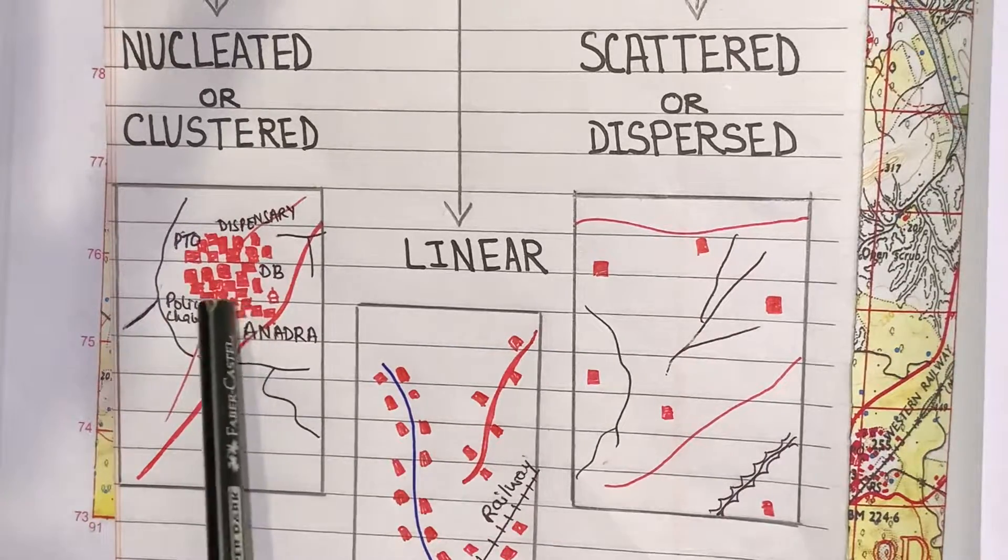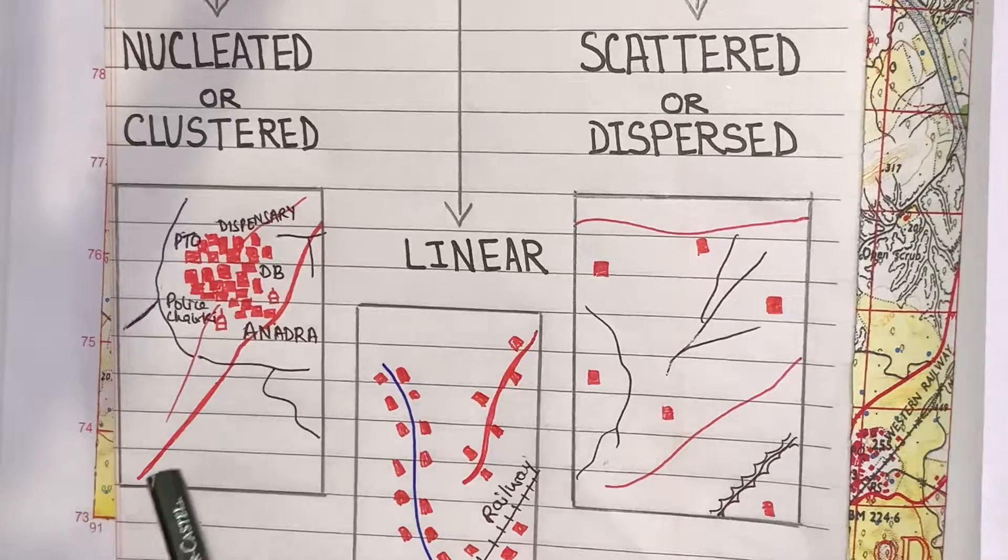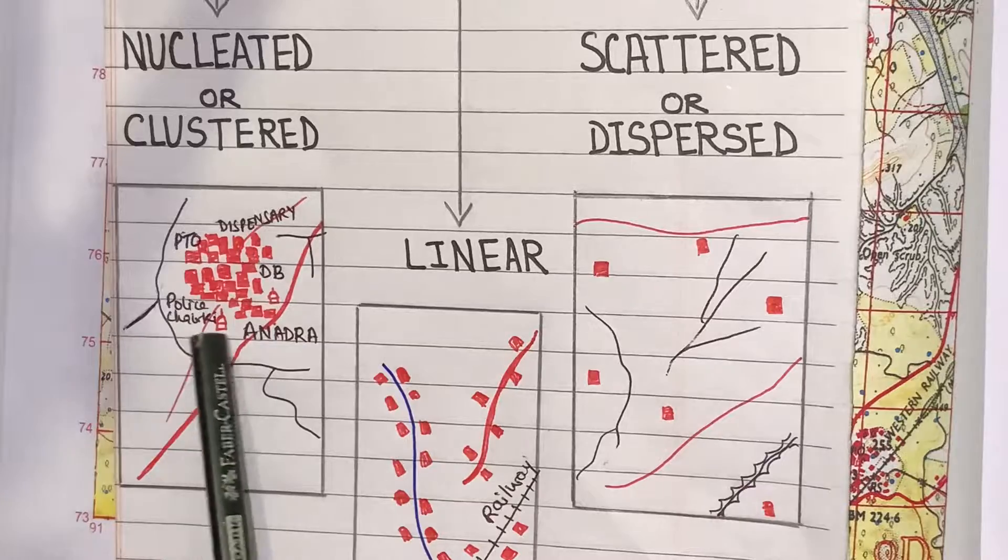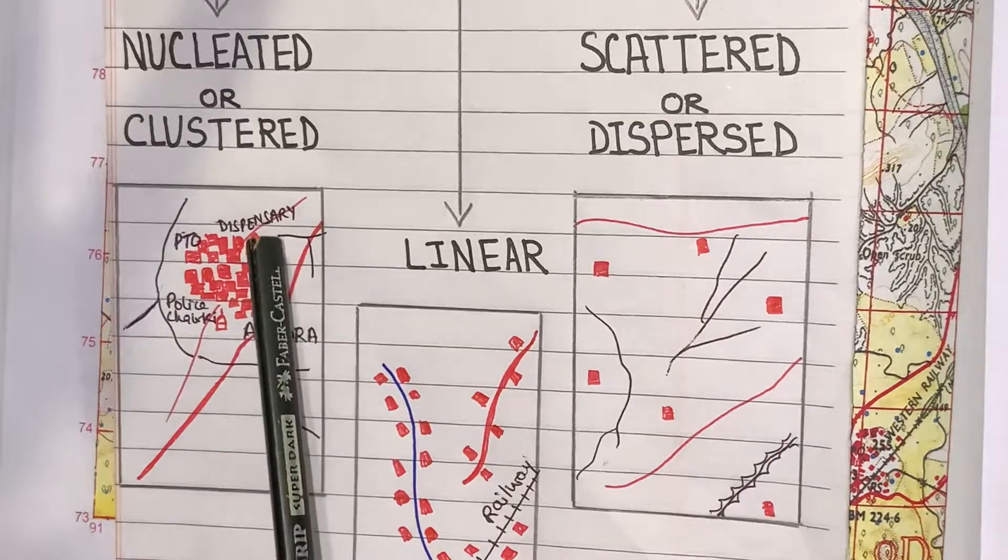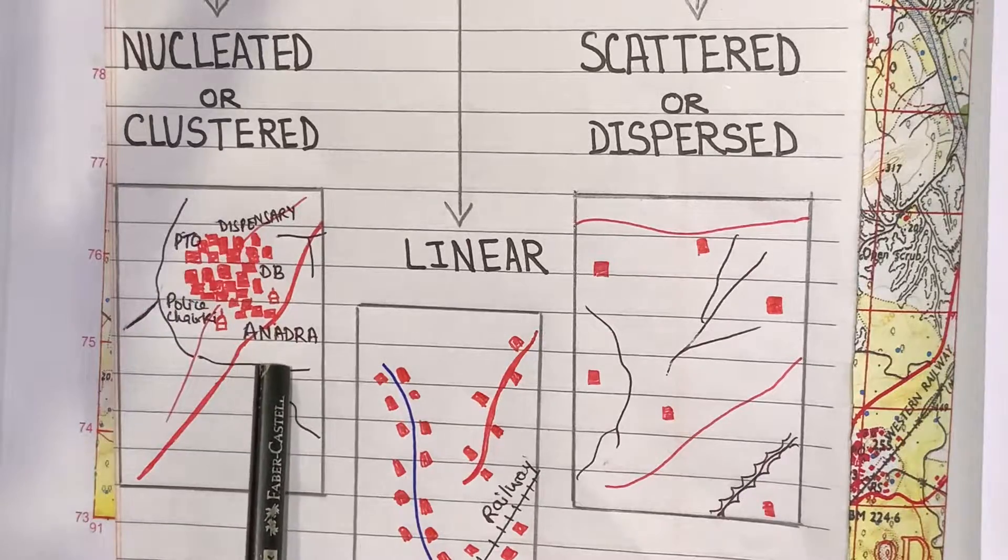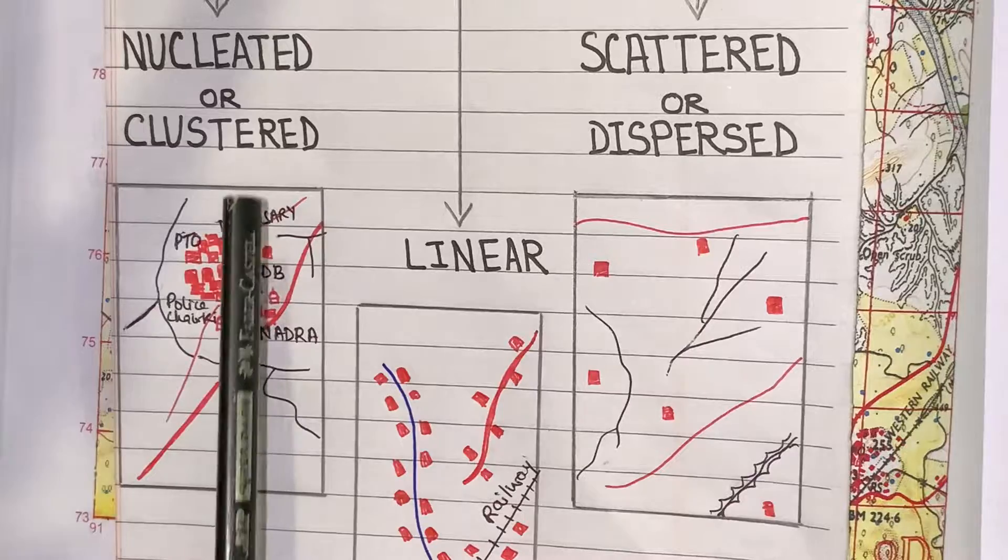One, you can see all the huts are close to each other. There is a metal road and other facilities are available: police chowki, temple, dark bungalow, dispensary, etc. Name of this settlement is Anadra. This is the example of nucleated or clustered settlement.